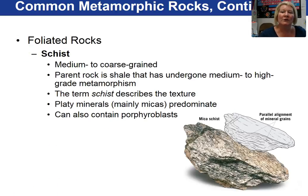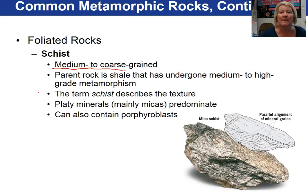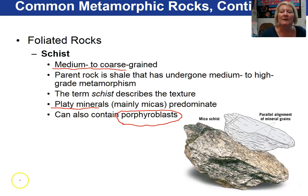When you have a schist, you are up to intermediate to high-grade metamorphic conditions, so the grains have grown to be medium to coarse in size — you can see them without magnification. Platy minerals dominate, so you get nice sparkly micas, and often times porphyroblasts exist. Garnets are very common porphyroblasts in schists.